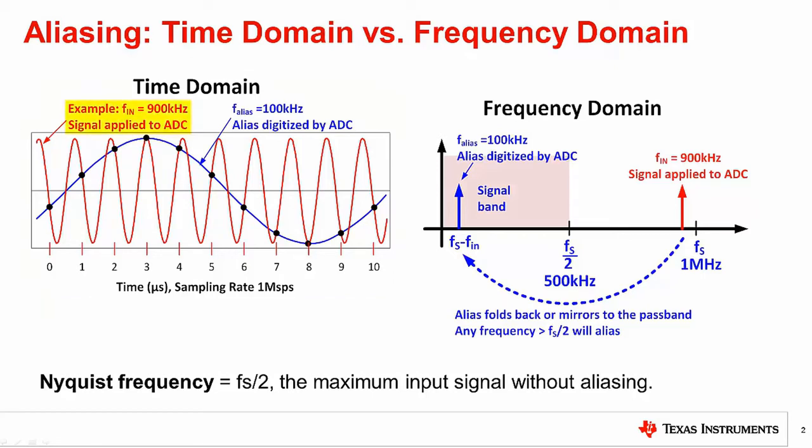Here we introduce the concept of aliasing for data converters in both the time domain and frequency domain. On the left-hand side, you see time domain aliasing. The input signal is a 900 kilohertz sine wave shown in red. The data converter is sampling at one mega sample per second, so each dot on the red curve represents a sample of the input signal.